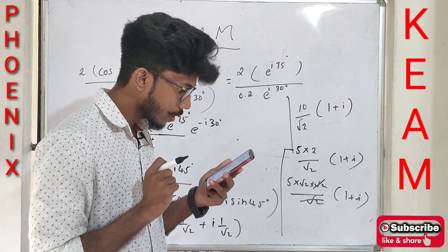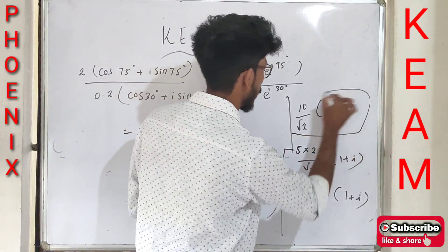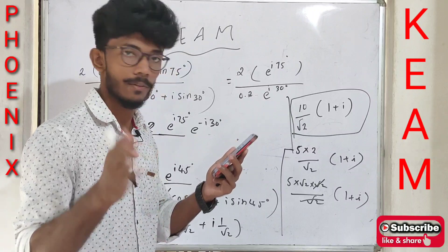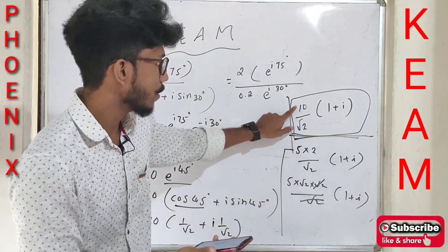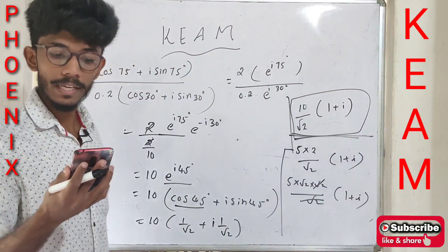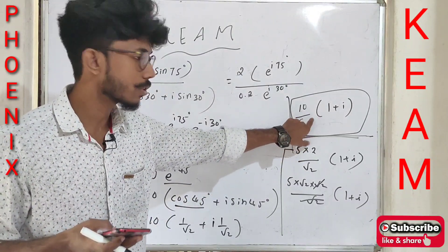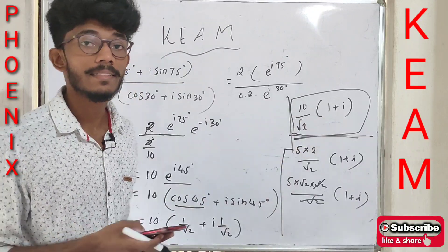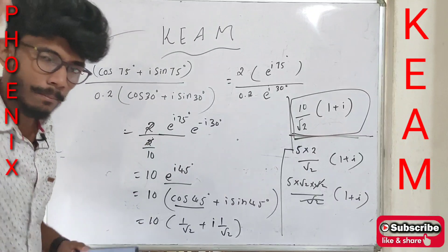10 × (1/√2)(1 + i). Multiply by √2/√2 to rationalize: this root 2 will cancel, giving 5√2 × (1 + i). That's the answer — 10/√2 × (1 + i). The answer is B. It's simple.